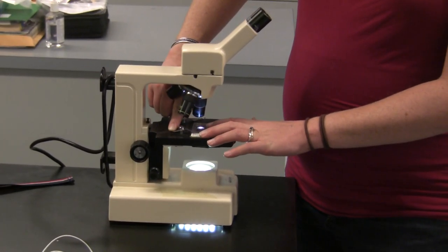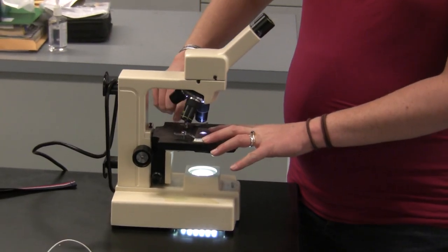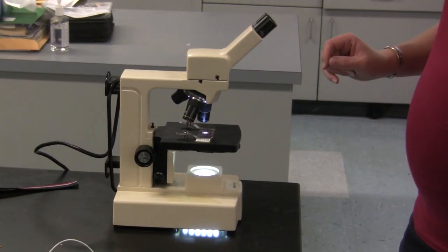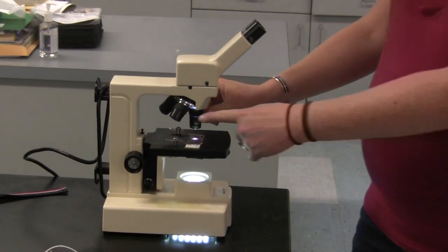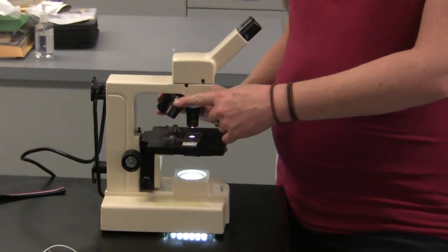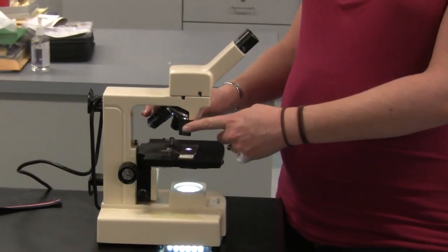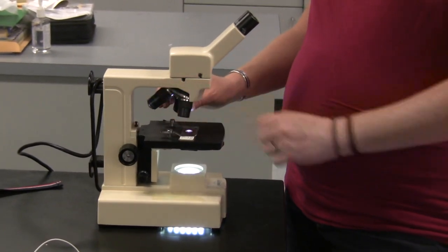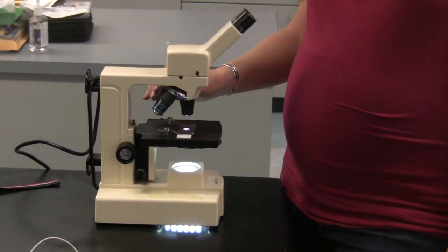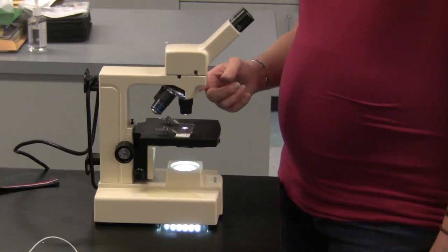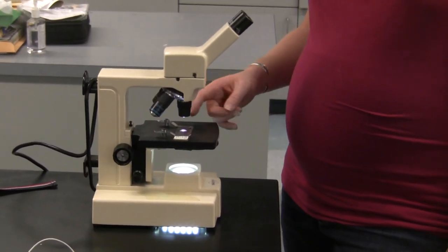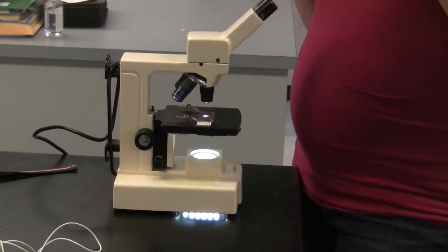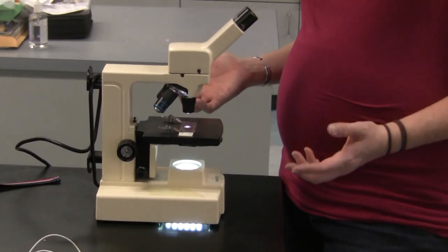So you place the slide on the stage and clip it down with the stage clips. You also want to rotate your lenses, these are the objective lenses, around so that the shortest lens is clicked into place and you can hear it. So once the short lens is clicked into place, you can center your slide so that you have the highest likelihood of actually seeing anything.